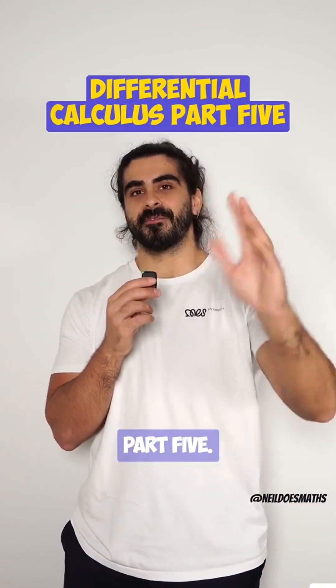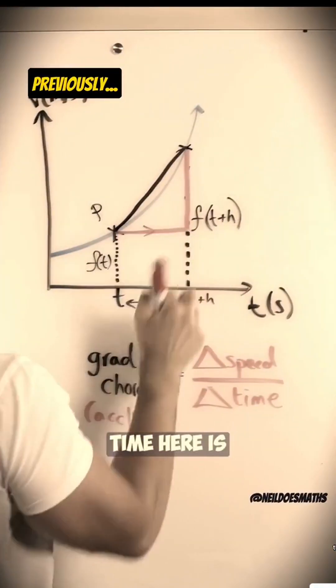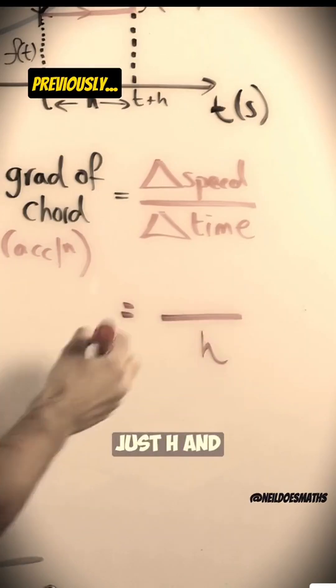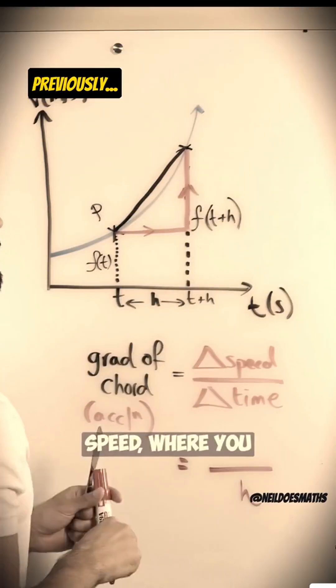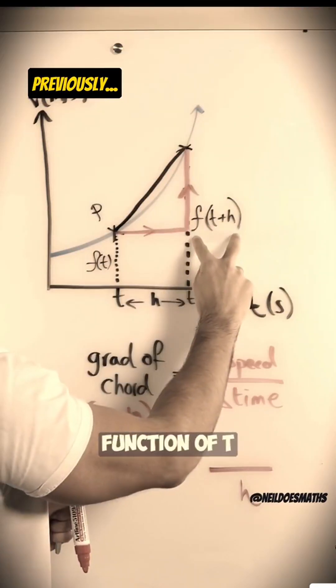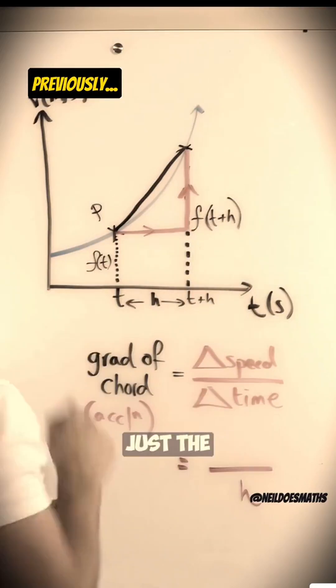Referential Calculus part 5. Let's do this. The change in time here is just h. And the change in speed, where you can see this speed is the function of t plus h, and this speed is just the function of time.